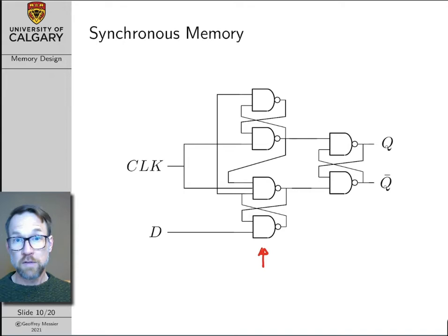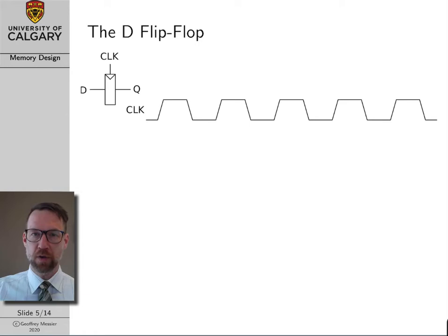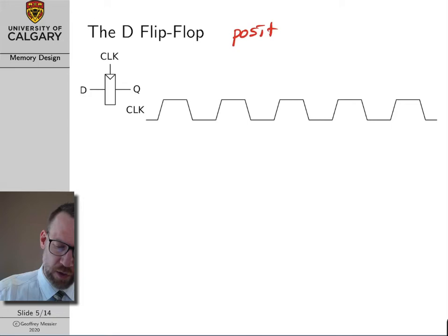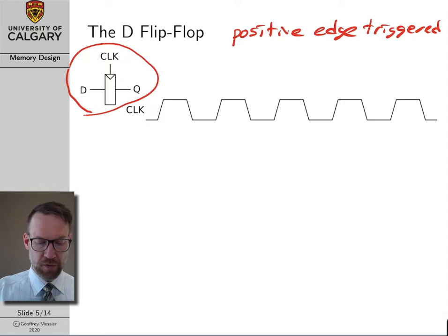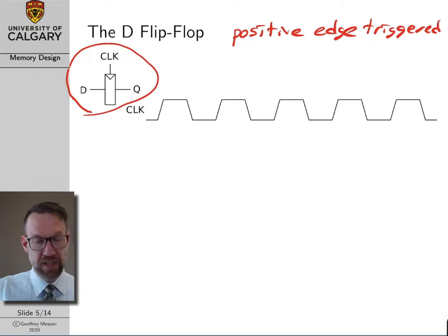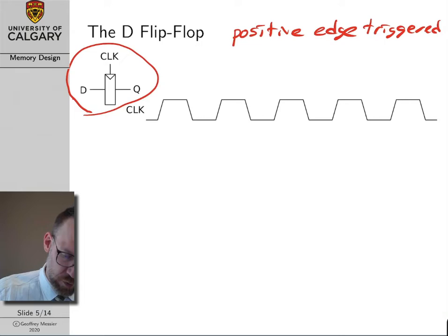The fundamental component we're going to use to build our data memory is the positive edge-triggered D flip-flop. This is how we'll draw our D flip-flop in a circuit: we have a clock signal input, a D input signal, and a Q output signal. The Q output stores the state contained inside our flip-flop. Let's do a little timing diagram as review. The value on the D line is clocked into the flip-flop on the rising edge of the clock waveform and stored until the next rising edge, and the stored value is what comes out of the Q output line.